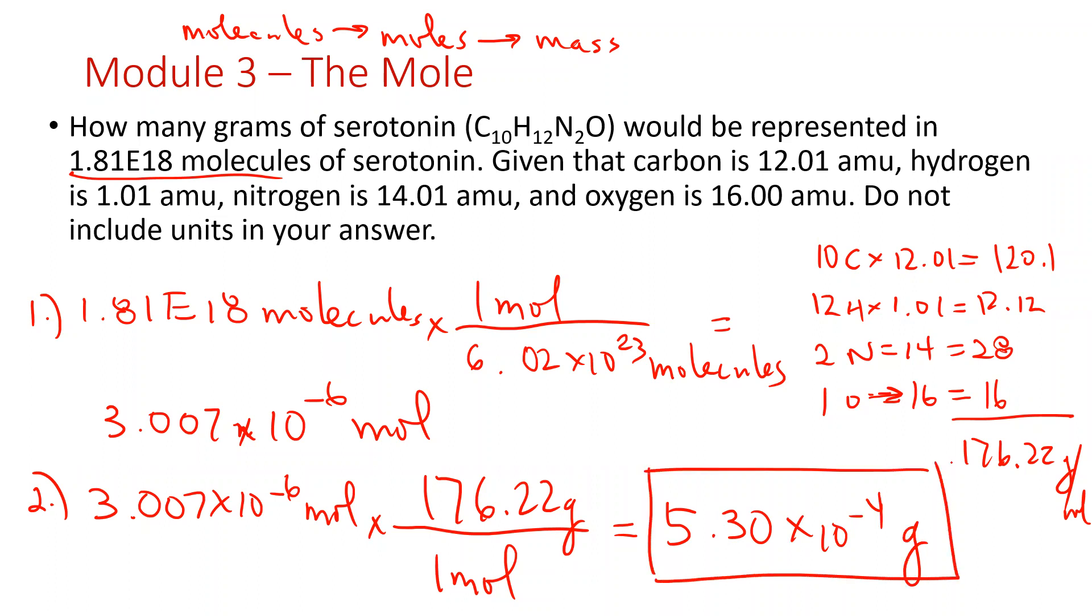Three significant figures because we've got three significant figures in 1.81×10^18. It came out to be like 5.298, we're going to drop the 8 and round that up to 5.30×10^-4 for that question.